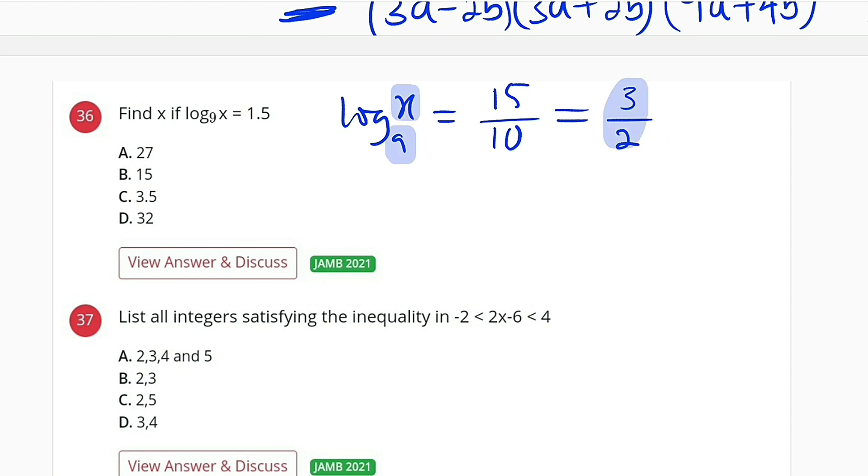That is the definition: 9 raised to the power of 3 over 2, and this must be equal to x. And this is the same thing as the square root of 9 raised to the power of 3.